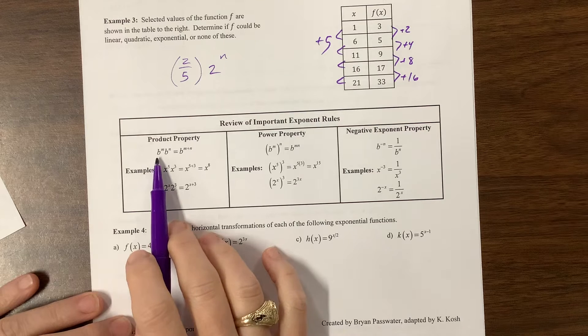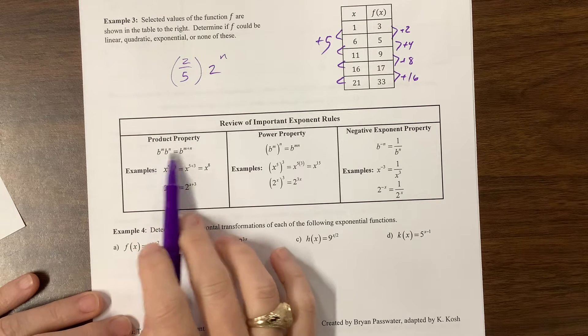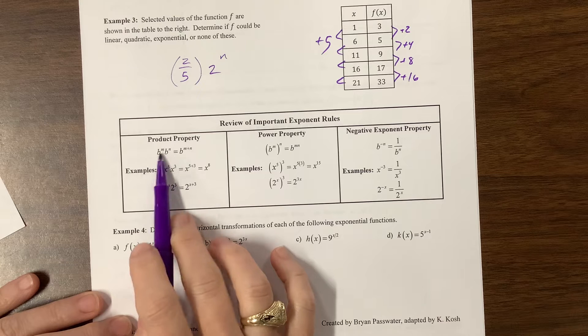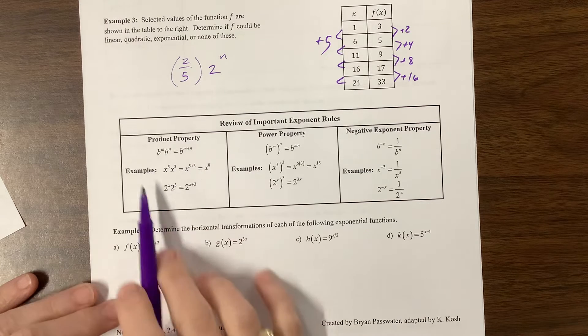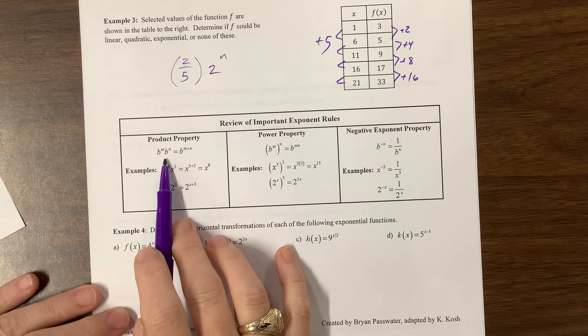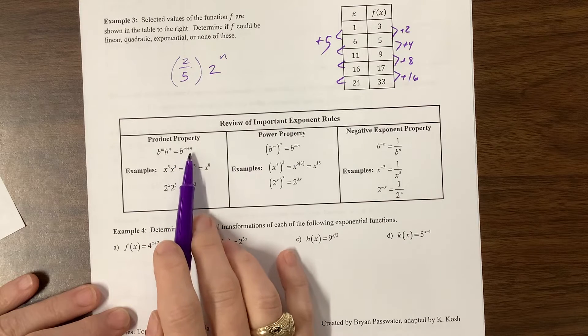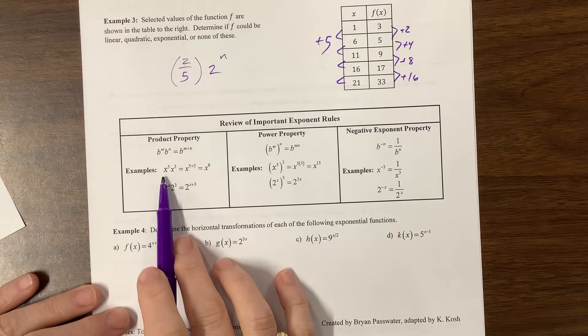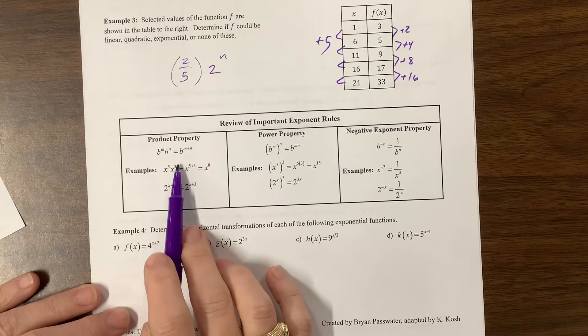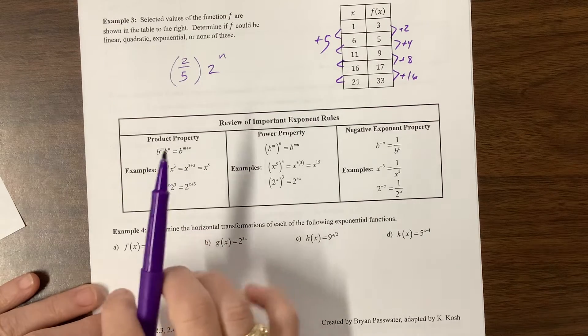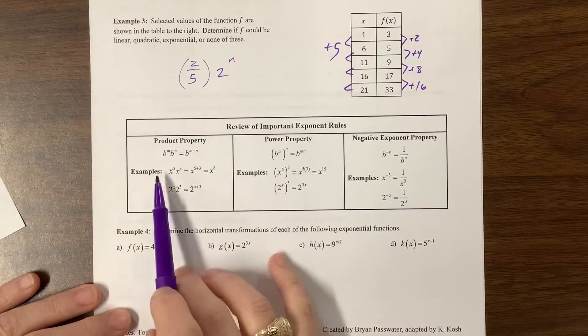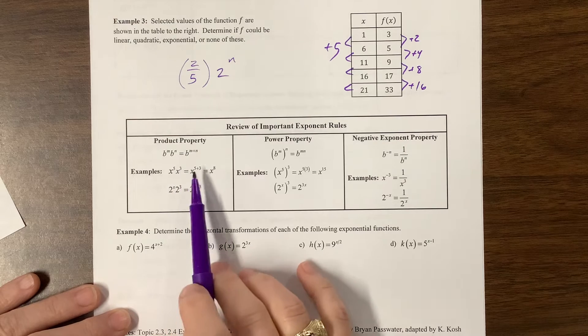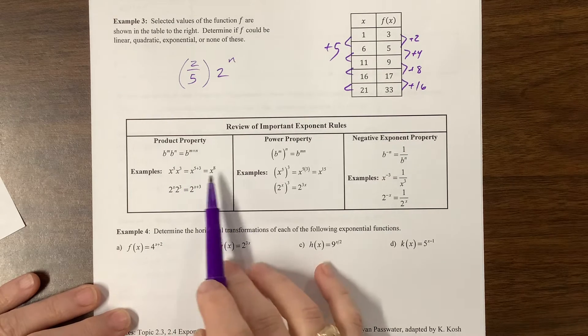So just a reminder, if I have the same base and those things are multiplying, I can add the exponents. So b^n times b^n equals b^(n+n), or another way to think about this is I have five x's and then three more x's, I'm multiplying x times itself five times, and I'm multiplying that times x times itself three times, which is a total of eight.